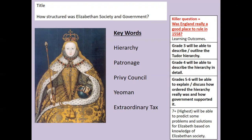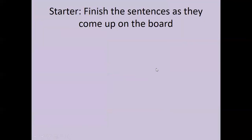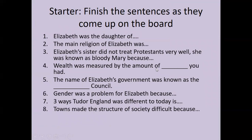Make sure you pause the video and write today's date, title, and keywords on your piece of paper, ready to go in your folder. Now a starter activity based on recall from last lesson — spend five to seven minutes on these questions. Number one: Elizabeth was the daughter of blank. The main religion of Elizabeth was blank — I'll give you a clue: Catholic or Protestant. Elizabeth's sister did not treat Protestants very well; she was known as Bloody Mary because...